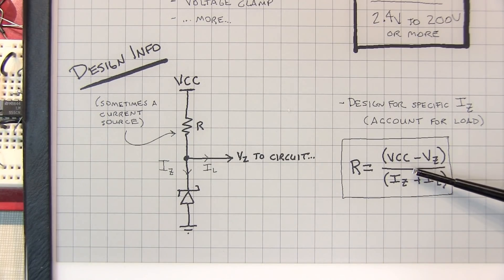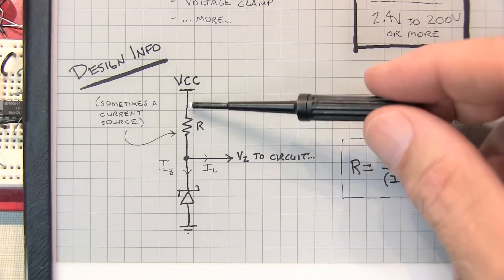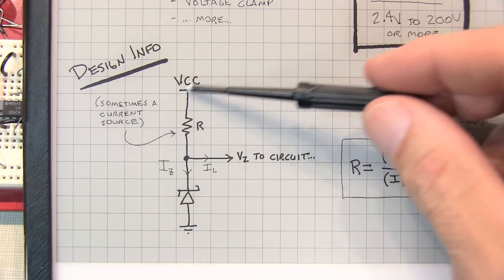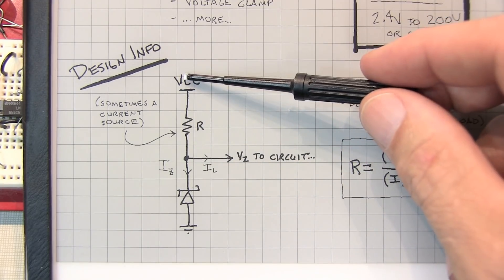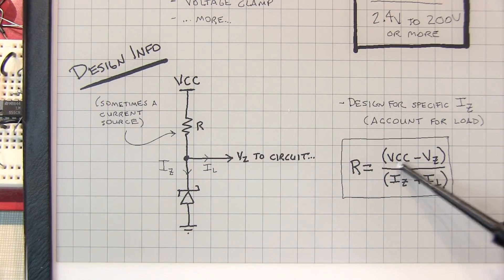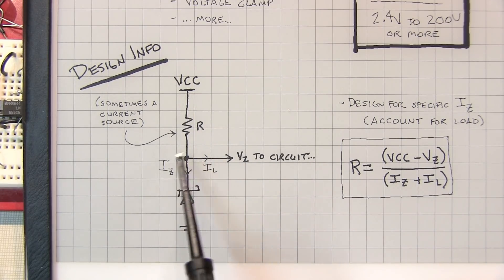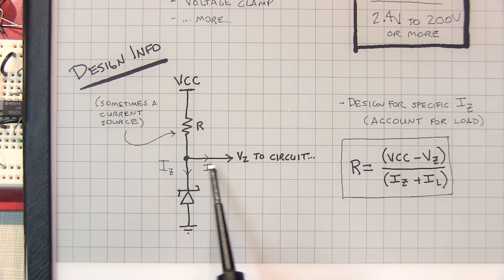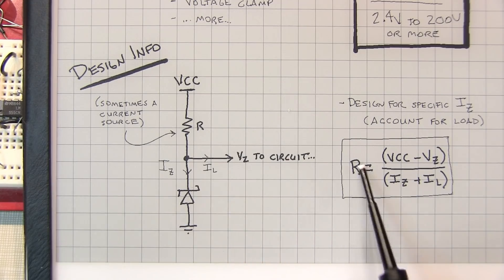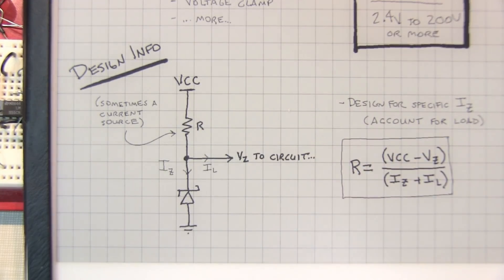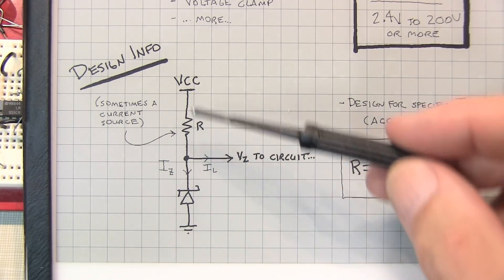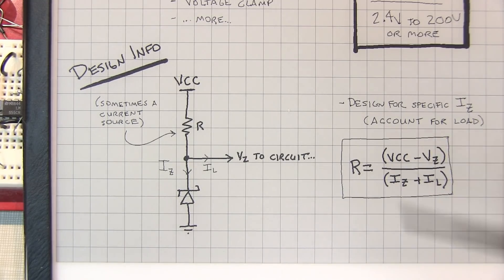The equation is actually pretty simple. The voltage across this resistor is going to be our supply voltage minus the Zener voltage. The current through this resistor equals the sum of the Zener current, which is some desired value from the datasheet, plus your maximum expected load current. Simple Ohm's law tells us what that resistor is. It's a pretty simple calculation to design the series resistor to employ a Zener diode as a shunt regulator or voltage reference.